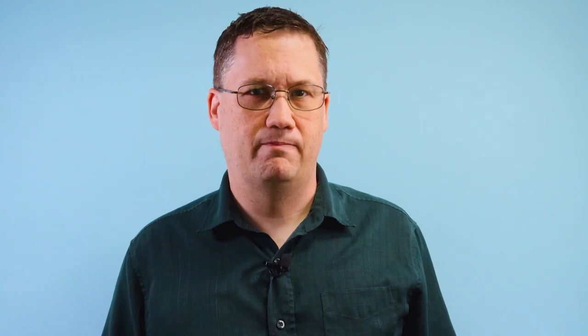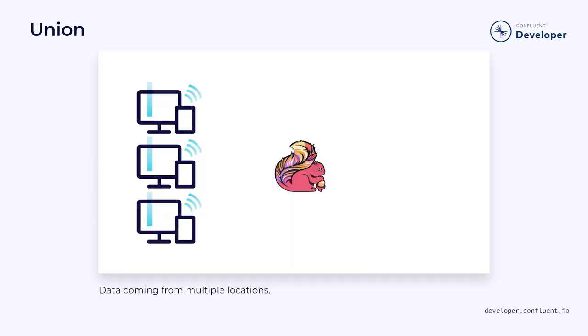So how do we create branches? Let's start by considering fan-in branches. There are a variety of ways to create these, but perhaps the simplest is a union. A union requires two streams that each contain the same data type. The union function will take the first stream and merge it with the second, resulting in a new stream that takes records from the original two, interleaving them where necessary. This type of operation can be useful when you are drawing similar data from multiple locations.